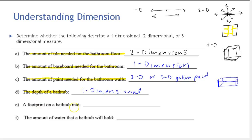Next: a footprint on a bathtub mat. Here's your bathtub mat — you step out of the tub with wet feet and leave a footprint from the water. How many dimensions does this have? We can go up and down on it, and also right and left, so it's two dimensions. It doesn't have a height moving up or down in space, and though it may be slightly depressed from the water, in general this is a two-dimensional measure.